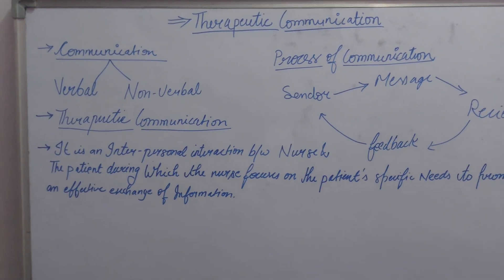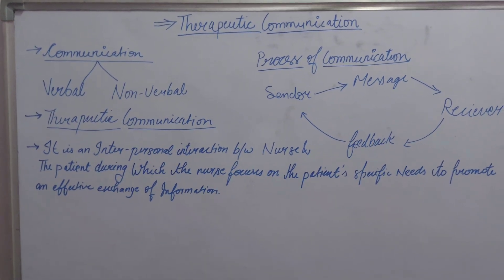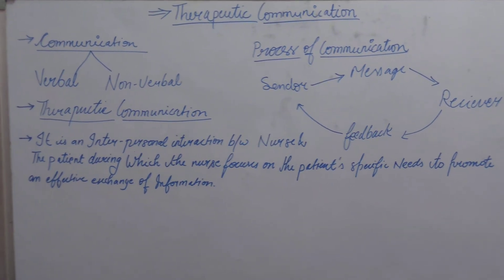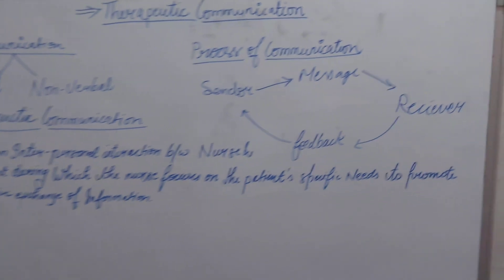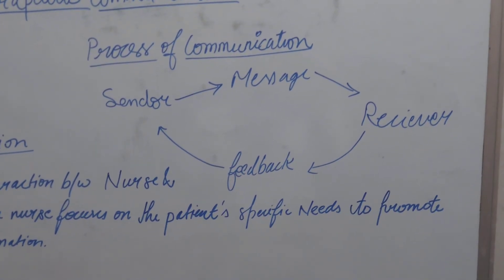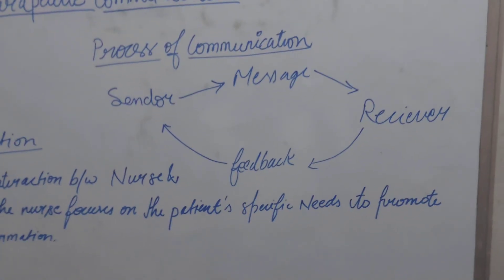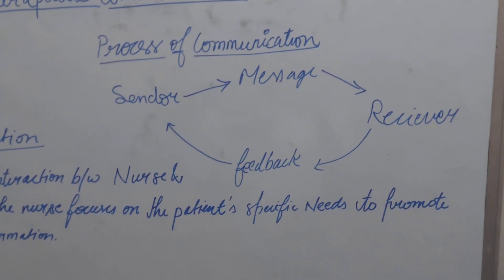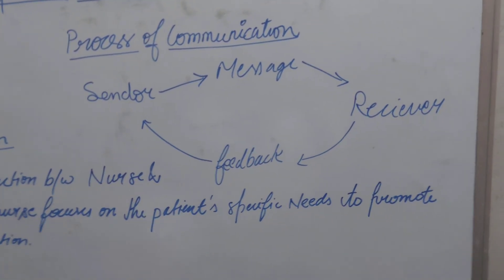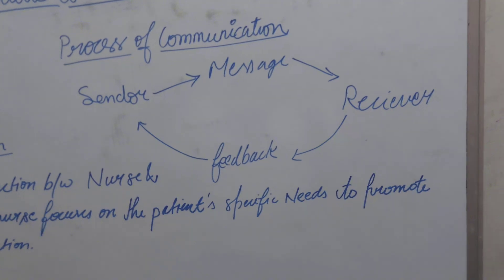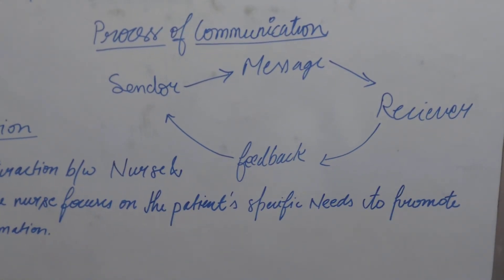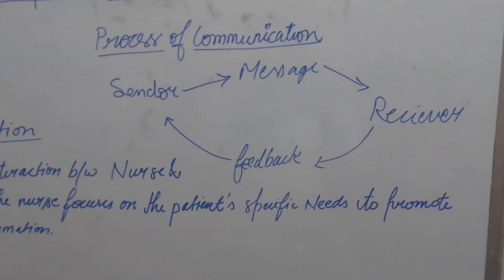We start with the basis of normal communication. Communication — verbal and non-verbal — is of two types. The process of communication involves a sender sending a message to a receiver, the receiver receiving the message, and then giving feedback back to the sender.